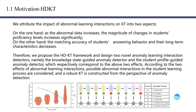We attribute the impact of anomalous learning interaction on KT into two aspects. On the one hand, as the anomalous data increases, the magnitude of changes in students' proficiency levels increases significantly. On the other hand, the matching accuracy of students' answering behavior and their long-term characteristics decreases.